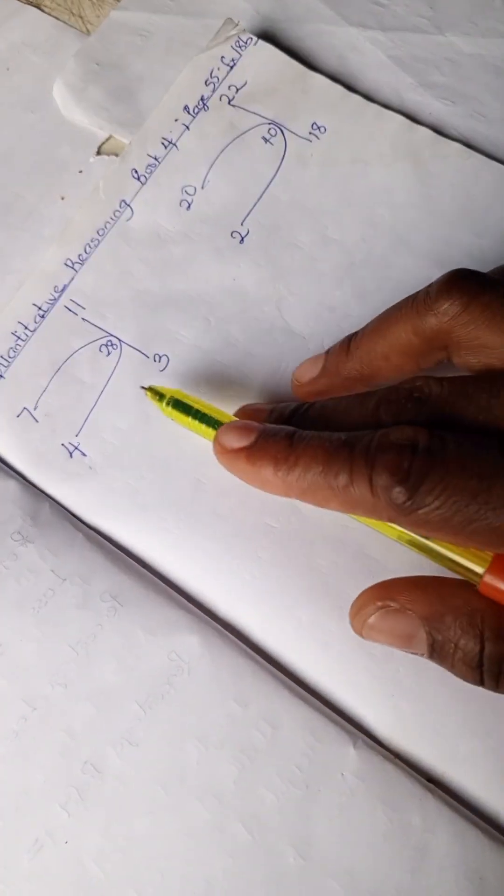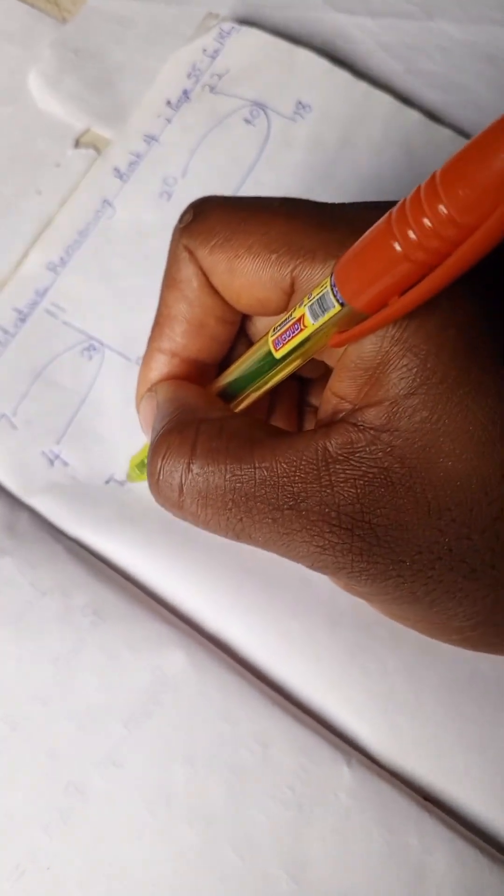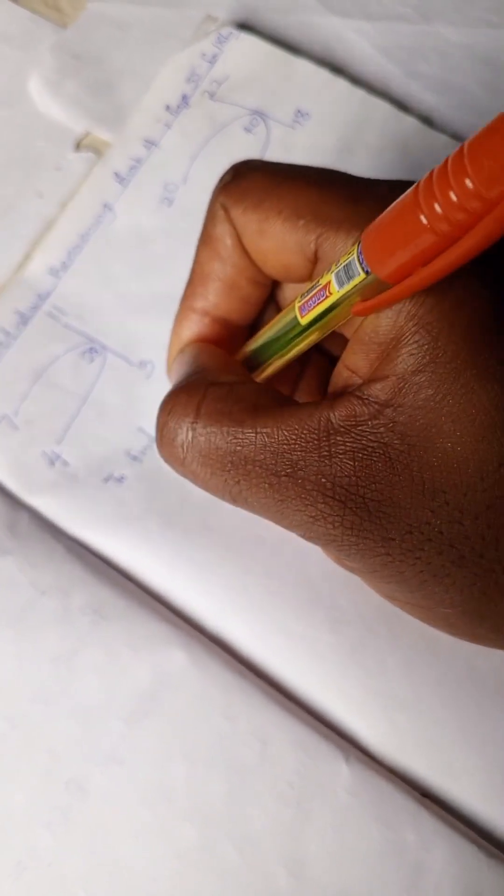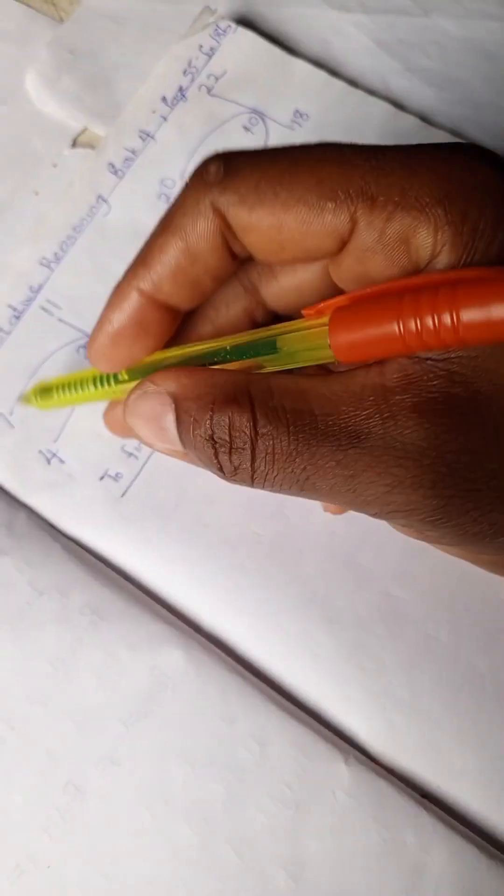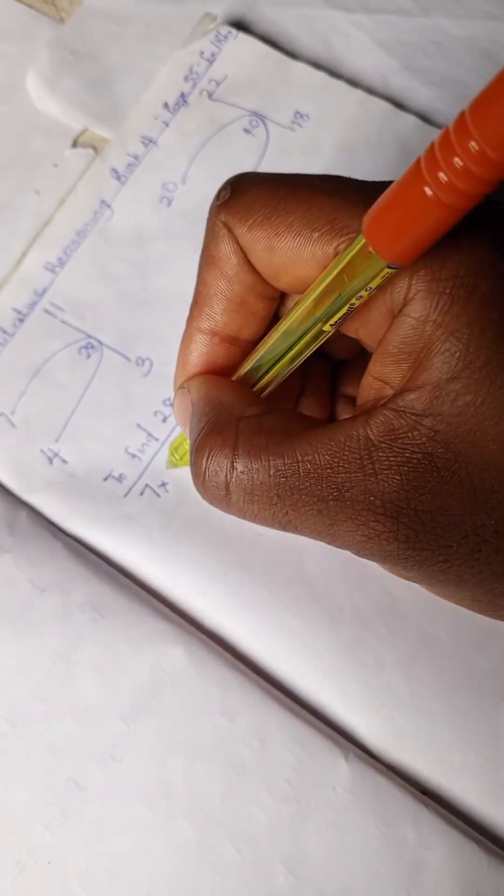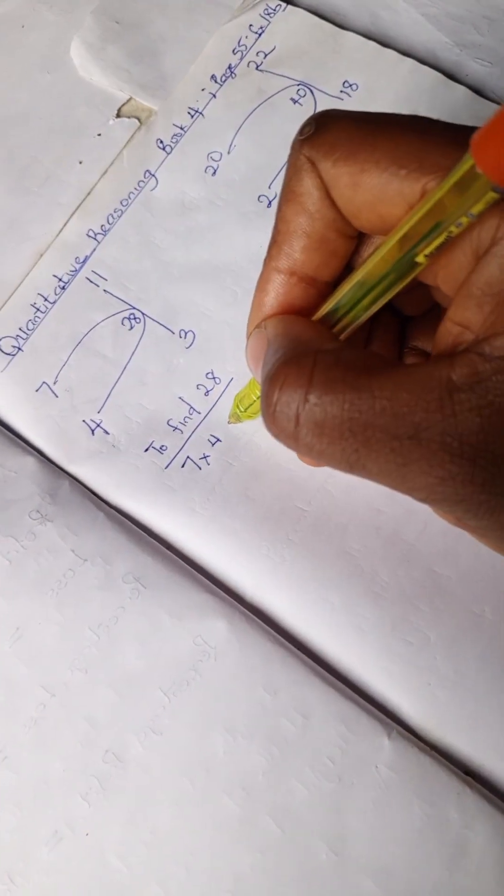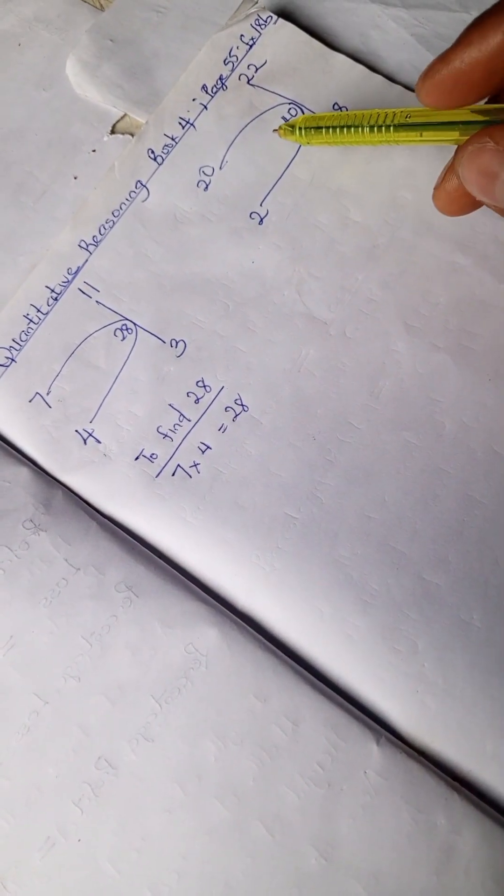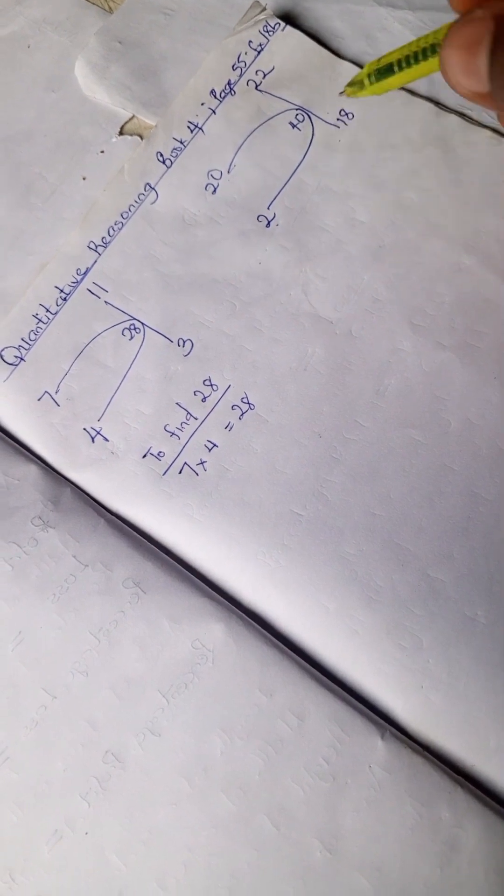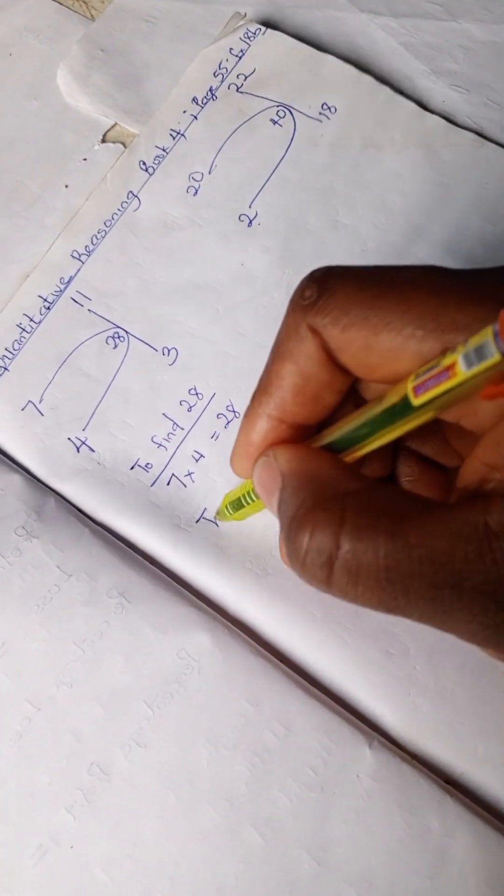So looking at this we're going to solve. Let's find, to find 28, we have 7 times 4 is 28. So let's see if it's going to work here, 20 times 2 is 40. All right, so we can go ahead to find...